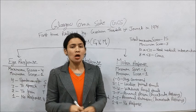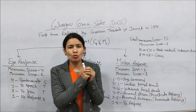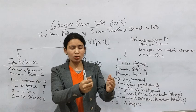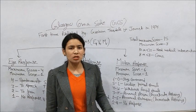In the case of decorticate posturing, when I apply pressure to the patient, the arms and wrists go into flexion, adduction, and flexion of the fists, while the lower extremities go into extension. This is the decorticate posturing response.